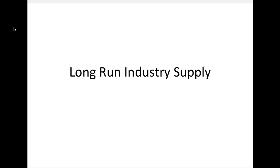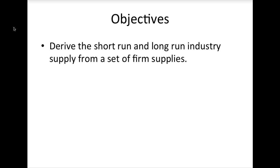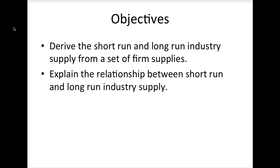Today we will examine short-run and long-run supply in an industry. By the end of this lesson you should be able to do two things: first, you should be able to derive the short-run and long-run industry supply from a set of firm supplies; and second, you should be able to explain the relationship between short-run and long-run industry supply.